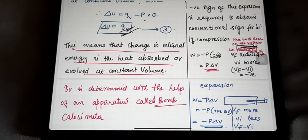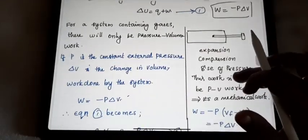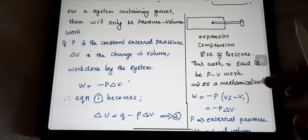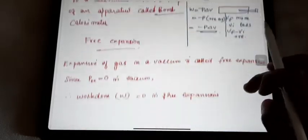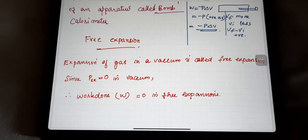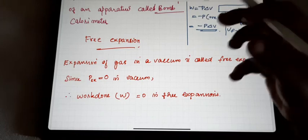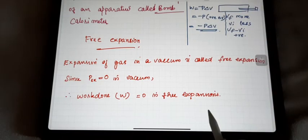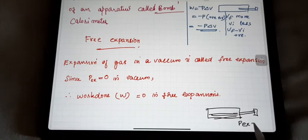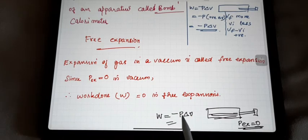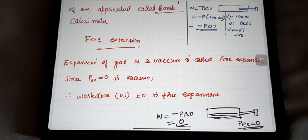This QV value can be calculated with the help of an apparatus called a bomb calorimeter. We discussed the significance of internal energy in the case of gases. If the system contains gases, that is when the pressure-volume work is applicable. Another term is free expansion. Free expansion means we are not applying any pressure. So if we have a syringe with a piston and we are not applying any pressure, it expands freely. The external pressure P equals zero. When P external equals zero, work W = -PΔV is also zero. So work done equals zero in free expansion.